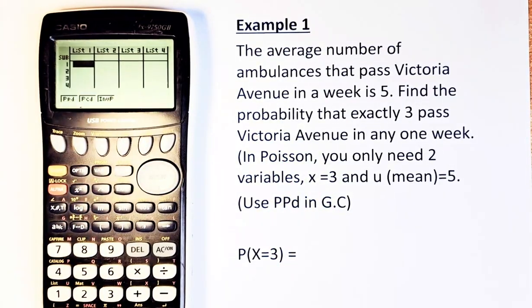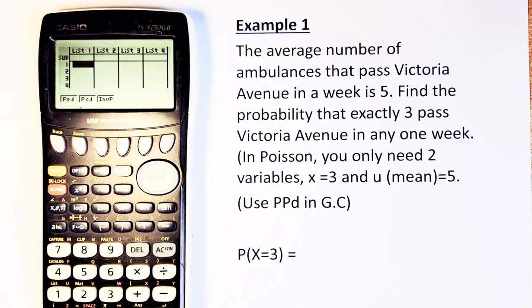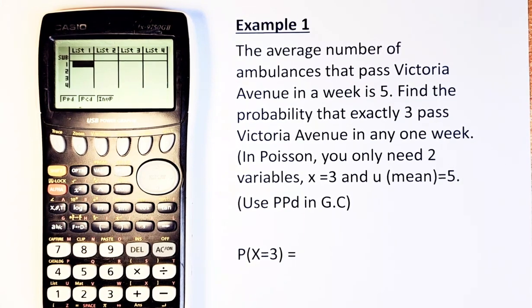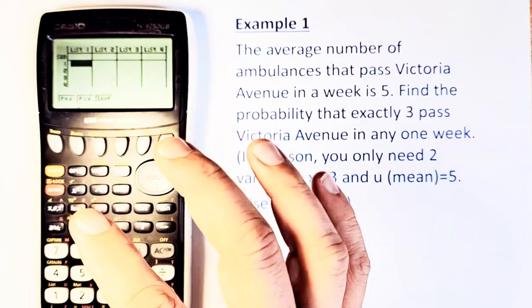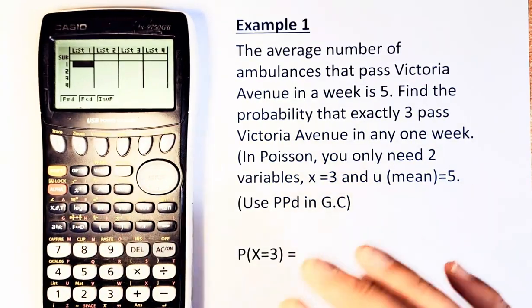When you press F1, there are 3 functions: PPD, PCD, and Inverse Poisson. Because I told you this is a point, they ask you exactly 3 passes through each week, so you have to do PPD. I always remember P as a point, and C is cumulative.